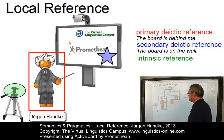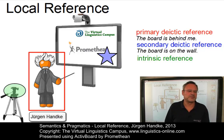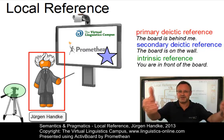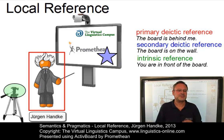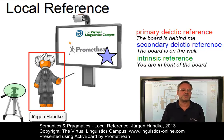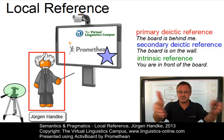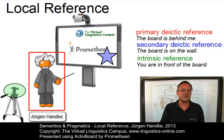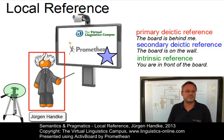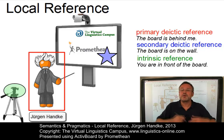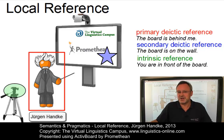And then there is the intrinsic reference. You — that is my audience — you are in front of the board. The intrinsic definition of an object in space uses an external addressee as the origin of the coordinate system — in this case, you. The reference point is any other object. So the origin is your position and the reference point is the board. This is from your point of view, and you are somehow behind the camera, as I said earlier on.